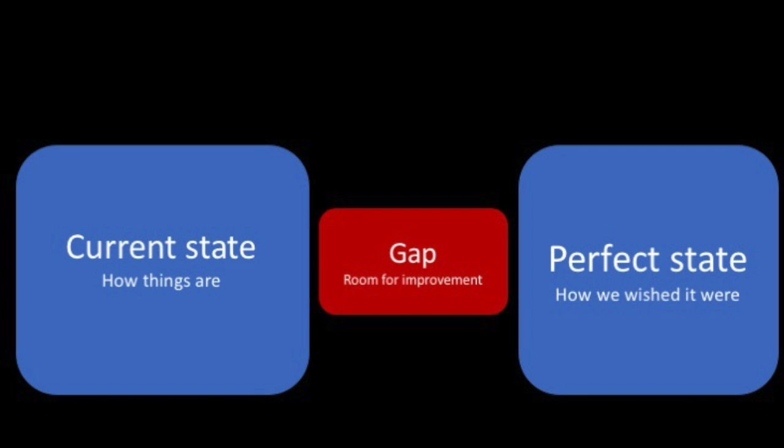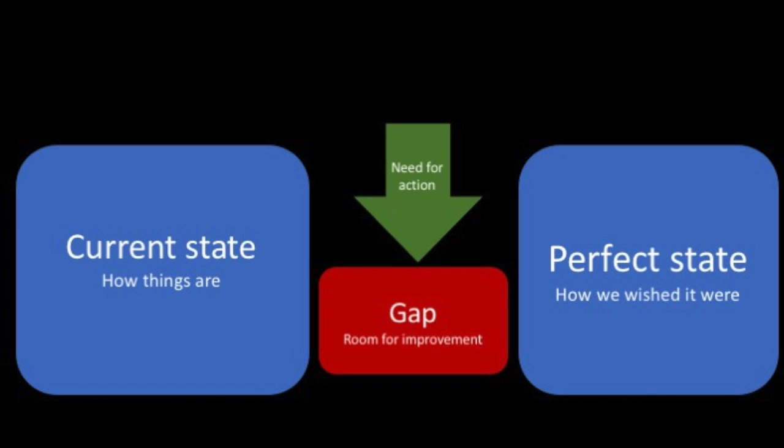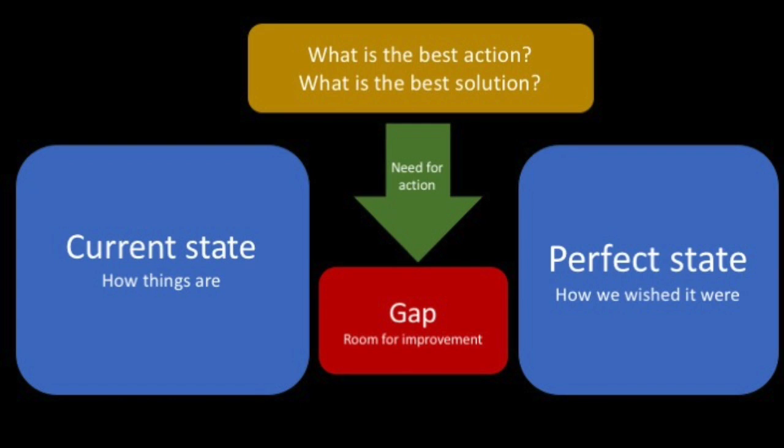This gap — from where we are to where we should be — represents a room for improvement. If we want things to get better, if we want the current state to get closer to what we wish it would be, this gap represents not only room for improvement but also a need for action. We see that we can act to bring things from the current state to the ideal state. This need for action represents a question about a solution. When we start thinking about solutions and actions, this gap — this room for improvement — becomes a problem that needs to be solved through some action.